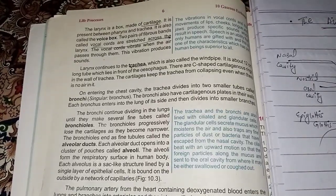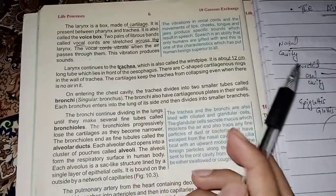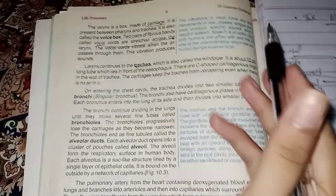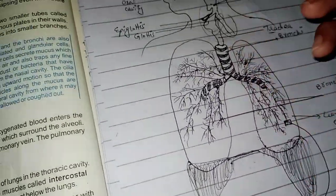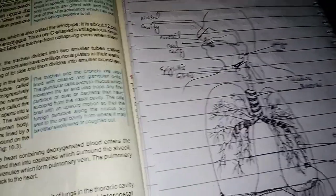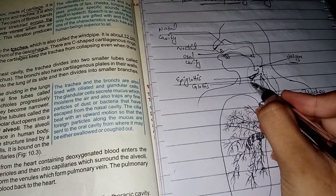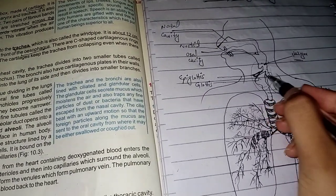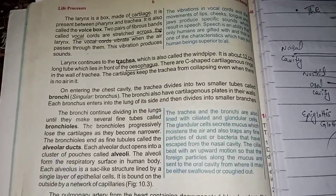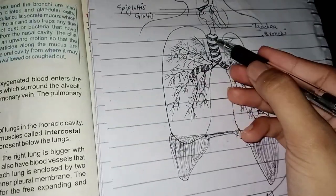The trachea is about 12 cm long — remember this for MCQs. It lies in front of the esophagus. It has C-shaped cartilage rings in its walls. These C-shaped cartilage rings keep the trachea from collapsing even when there is no air in it.